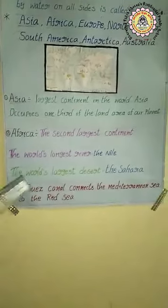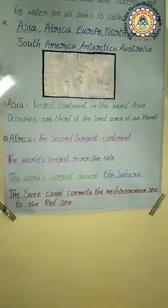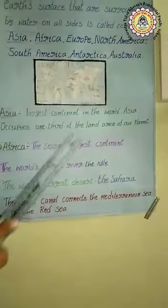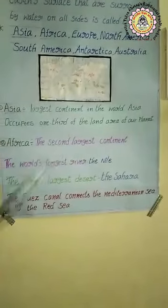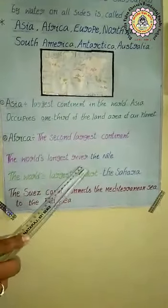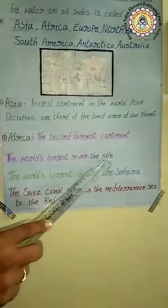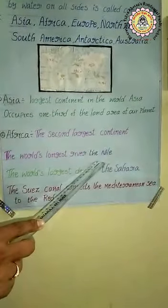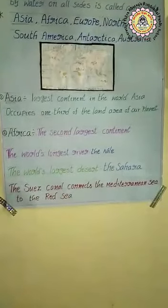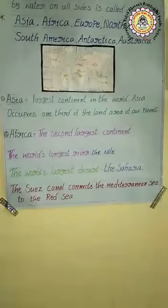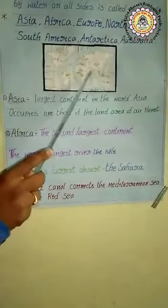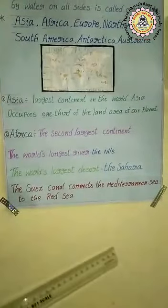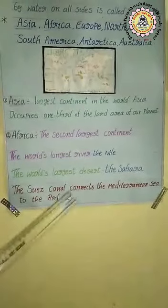Geographically, there are particular special features of the African continent. The world's longest river is located here — that is the Nile River, which is located in the African continent.